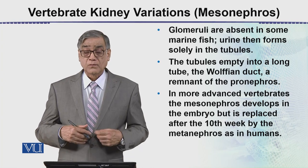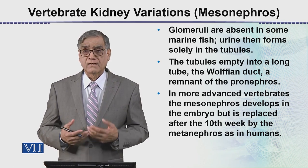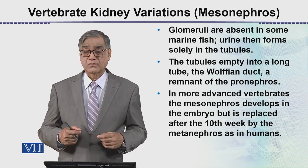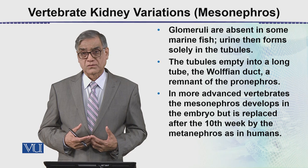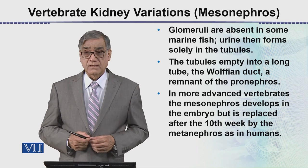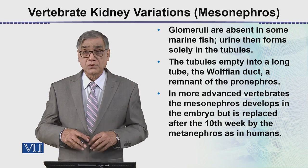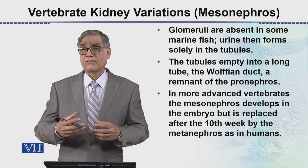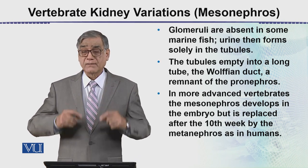The glomeruli are absent in some marine fishes — they are not developed. However, in most amphibians the glomeruli are quite well formed, because the glomerulus is the window of the kidney where maximum blood filtration occurs. After reabsorption and secretion, the tubules empty into a long tube — that is the Wolffian duct, a remnant of the pronephric duct.